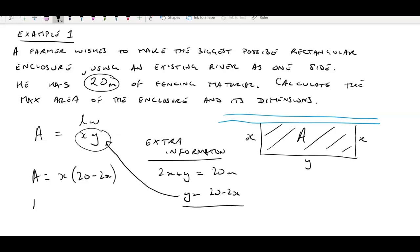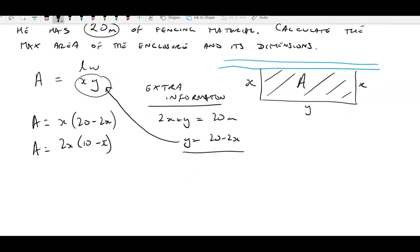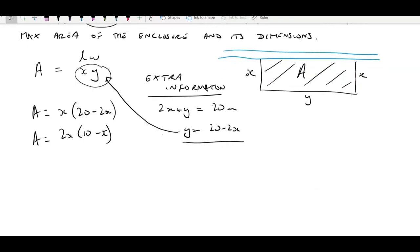I'm going to factorise that a little bit further by taking out the 2, so A equals 2X(10 minus X). Now we do have an area formula in terms of one variable X, an equation we're fairly familiar with. If I expand that, it would be 20X minus 2X². It's a negative quadratic which means it's upside down. We can draw a graph, area against X.